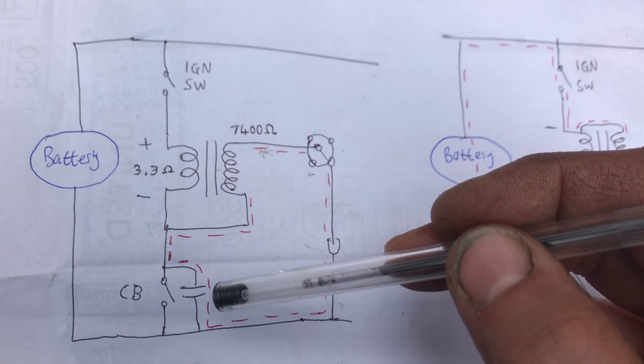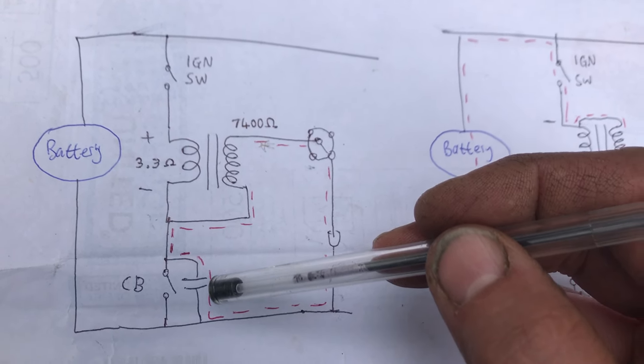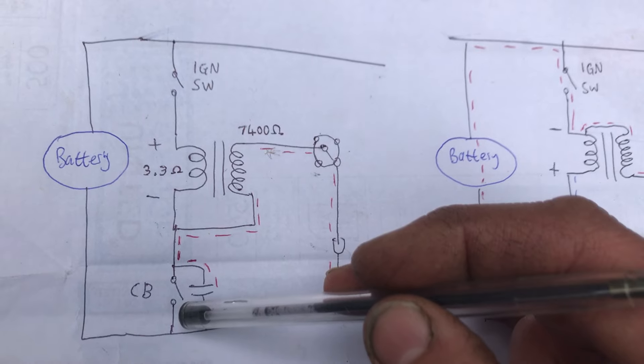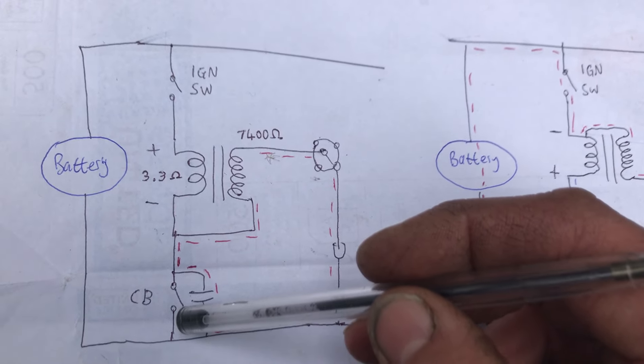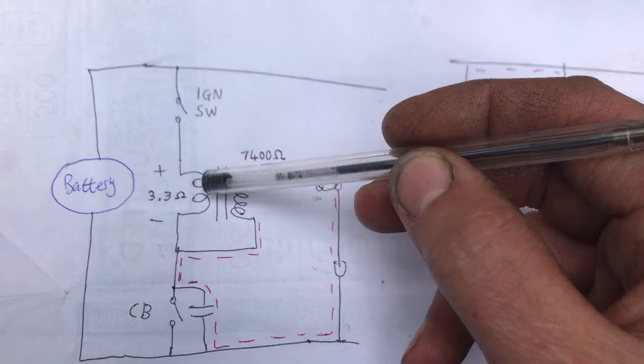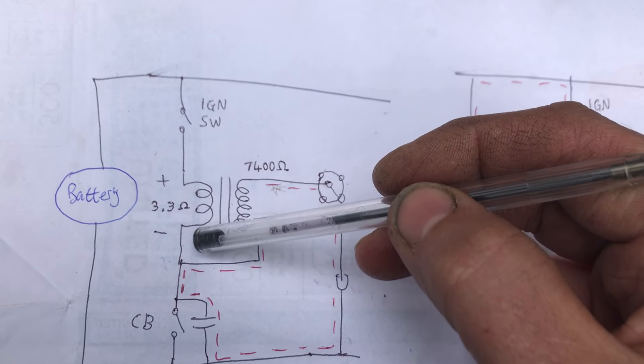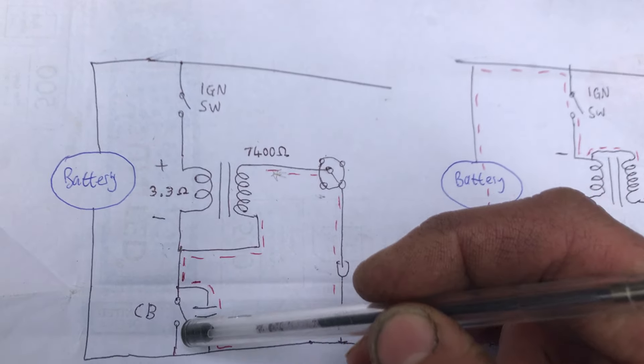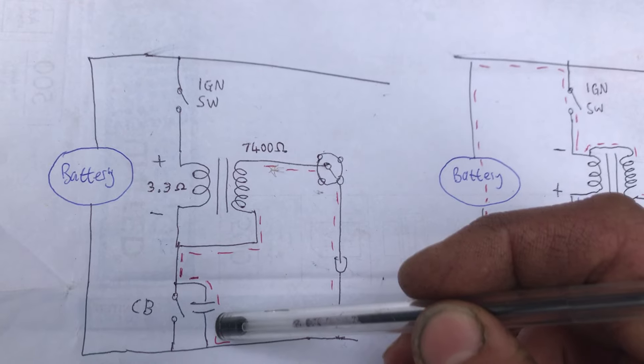The secondary function of that capacitor is to quench the spark across the contact breakers because when you open those this inductive 12 volt circuit has a tendency to burn the points if that capacitor is not correct.